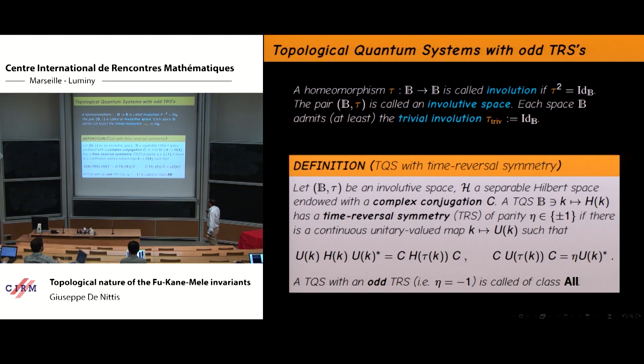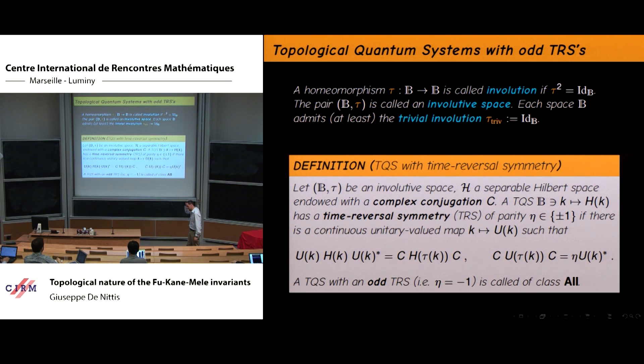I say that my Hamiltonian H(K) has time reversal symmetry if, when I conjugate my Hamiltonian with this family of unitary operators, I obtain the complex conjugate of the Hamiltonian at the point τK. I also need a condition that the inverse of my unitary at point K equals the complex conjugate of my unitary at point τK, plus a sign η which could be plus or minus one. This sign distinguishes two cases: the bosonic case where η = +1, called class AI, and the fermionic case where η = -1, called class AII.